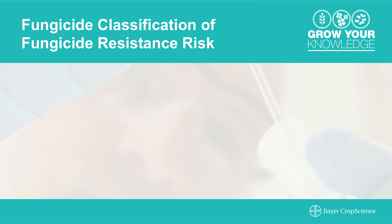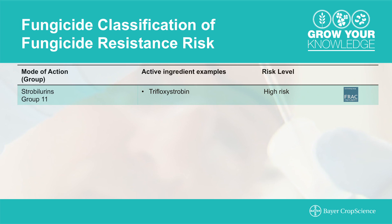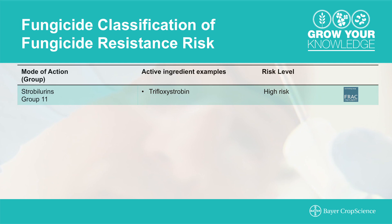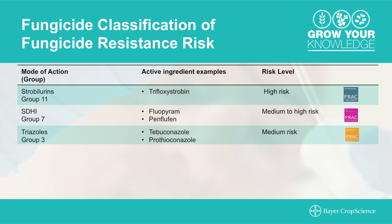FRAC has ranked the major modes of action across the globe. Strobilurins, or Group 11s, are ranked as high risk — they look at whether the mode of action works on a single site, whether a single gene confers resistance, and whether it has high and persistent activity. SDHIs, or Group 7s, are ranked as medium to high risk, and triazoles, or Group 3s, are ranked as medium risk.